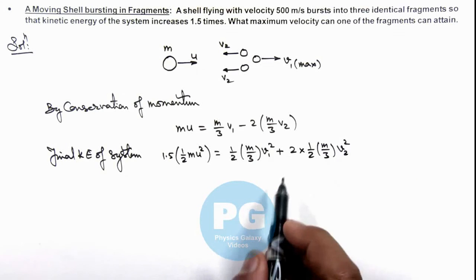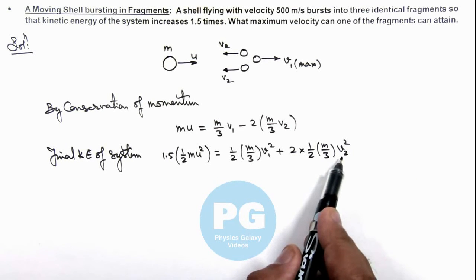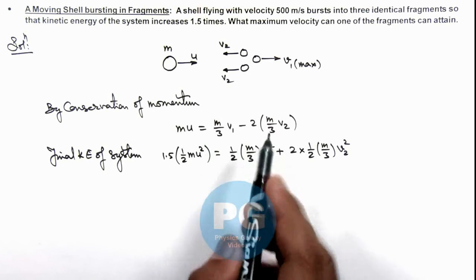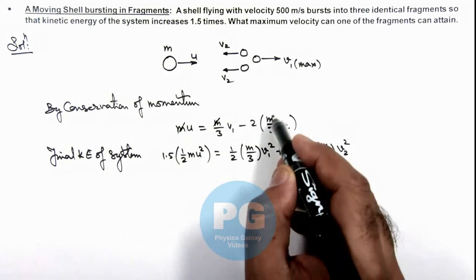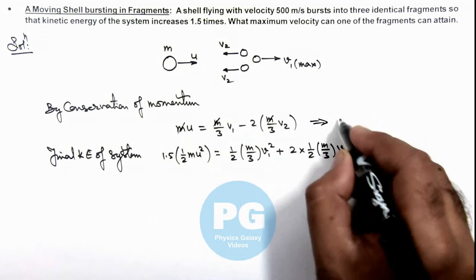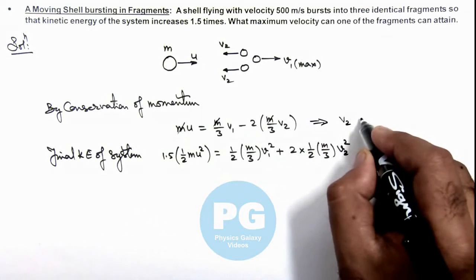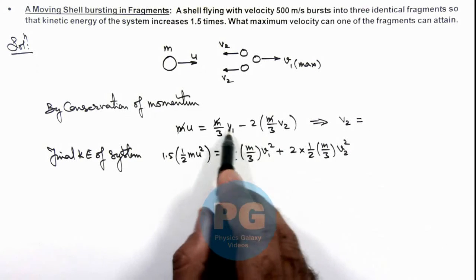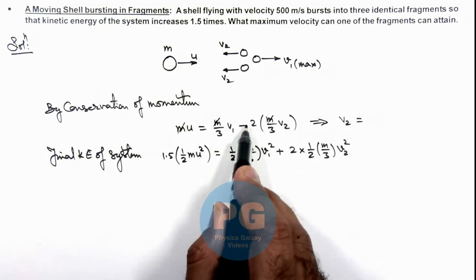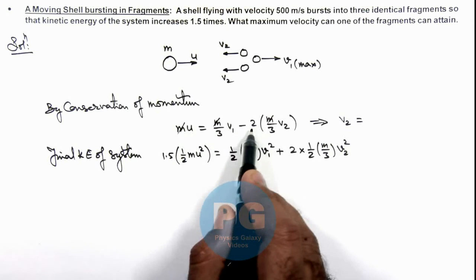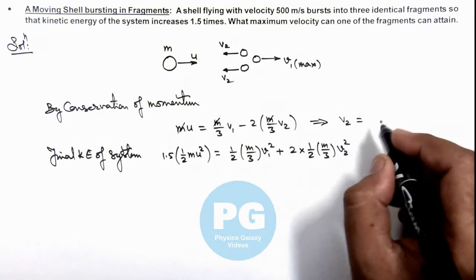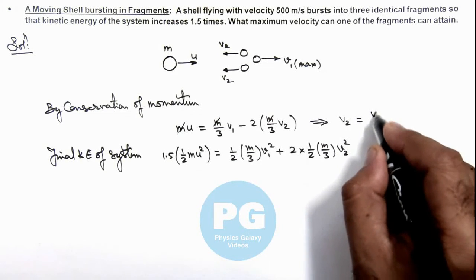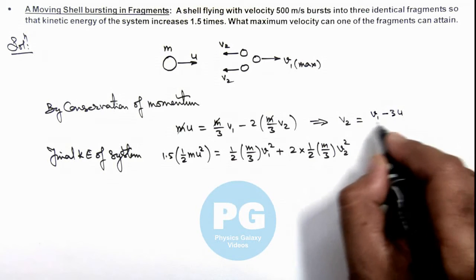Now if we substitute the value of v₂ here from this first relation, we can see m gets cancelled out and this is giving us the value of v₂ is equal to v₁ minus 3u divided by 2.